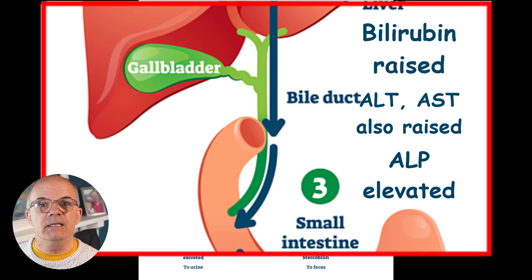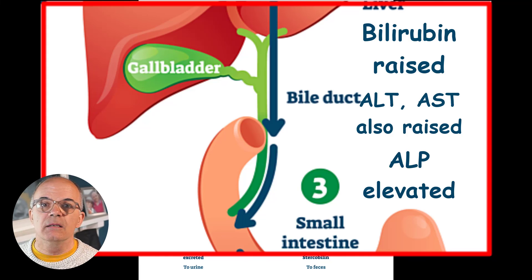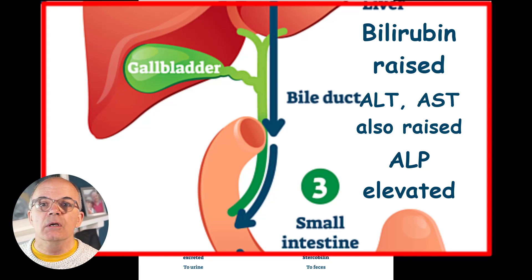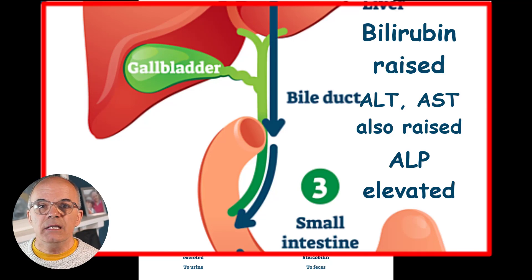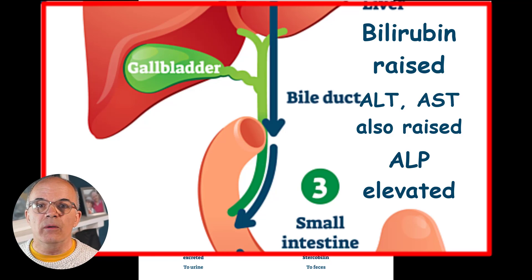This is an enzyme which can be found mainly in the liver, bone, biliary tree, and the placenta. So other causes of a rise could involve the bones or because the patient is pregnant. However, if the liver enzymes ALT and AST are also elevated, this would point towards the liver or the biliary tree being the problem, and the main rise would be in conjugated bilirubin.